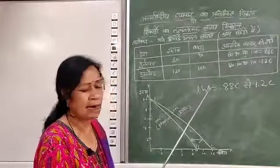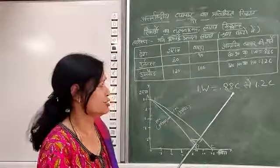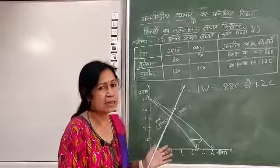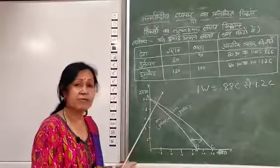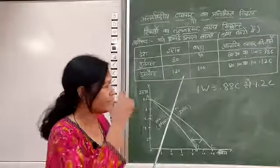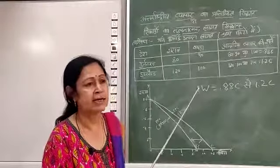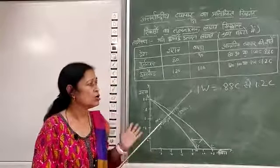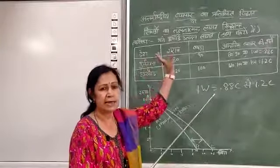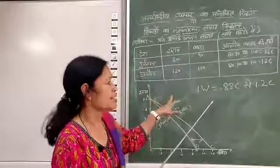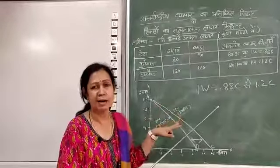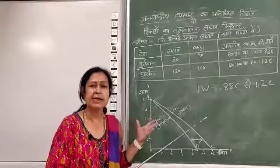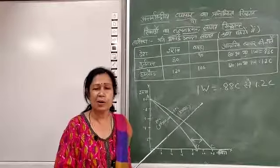Next — तुलनात्मक लागत सिद्धान्त की आलोचना। आलोचना उन मुख्य मान्यताओं पर आधारित है जो Ricardo ने अपने सिद्धान्त में ली हैं। इन्होंने केवल श्रम लागत को शामिल किया, जबकि हम जानते हैं उत्पादन का श्रम एक मात्र साधन नहीं है। उत्पादन के साधन हैं — भूमि, श्रम, पूँजी, प्रविधि, साहस — और सब मिलकर उत्पादन की एक इकाई की लागत निर्धारित होती है। इसलिए केवल श्रम लागत को शामिल करना, इनके आधार पर आलोचना की जाती है।